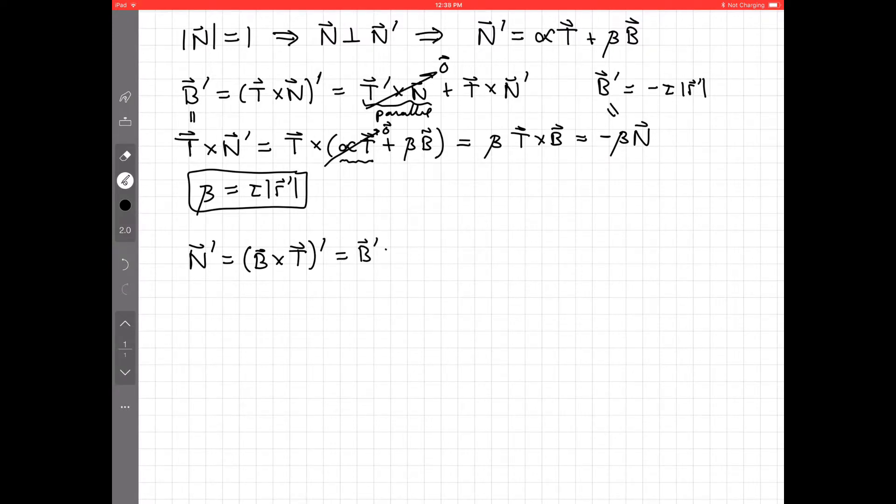So n' is (b cross t)'. Again, using the product rule, we have b' cross t plus b cross t'. That's our product rule.